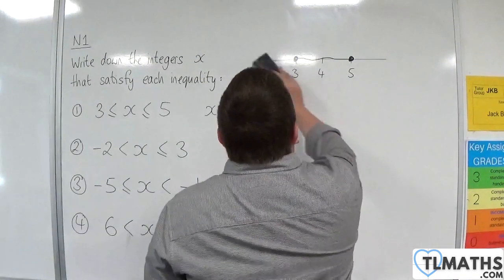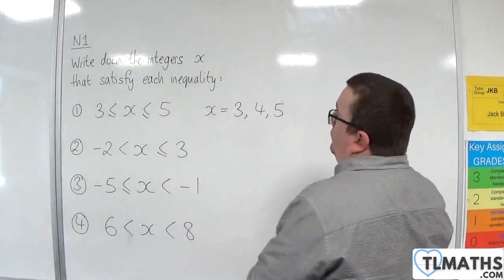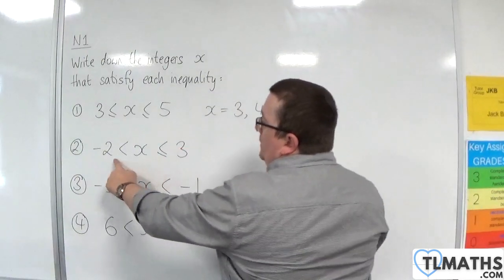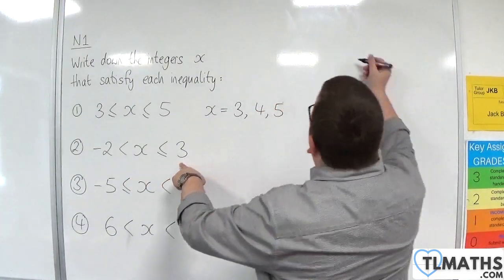So for the second one, we've got x is greater than minus 2, but less than or equal to 3.